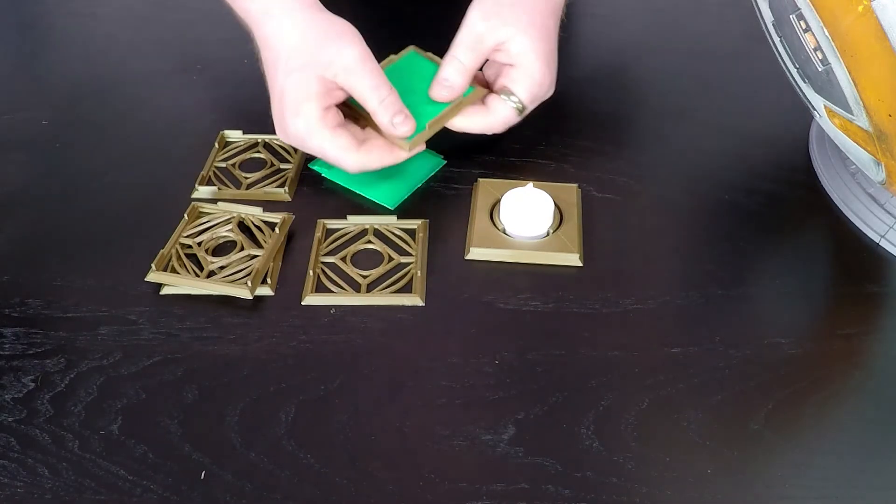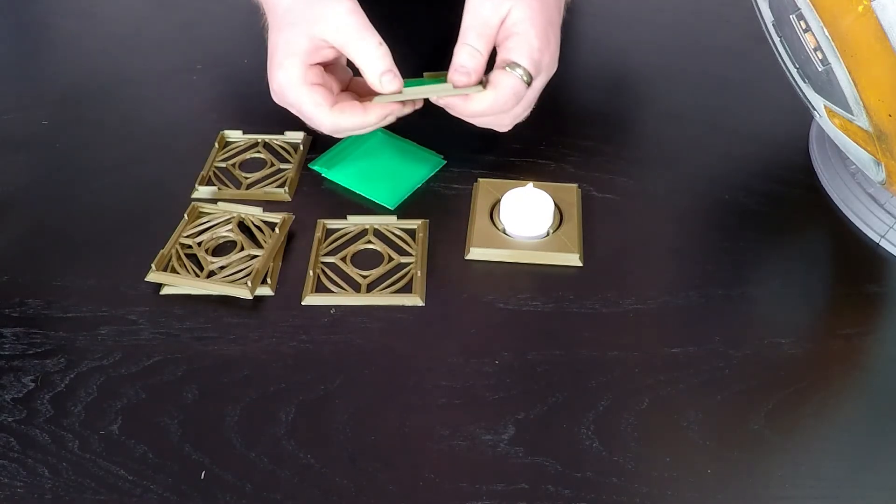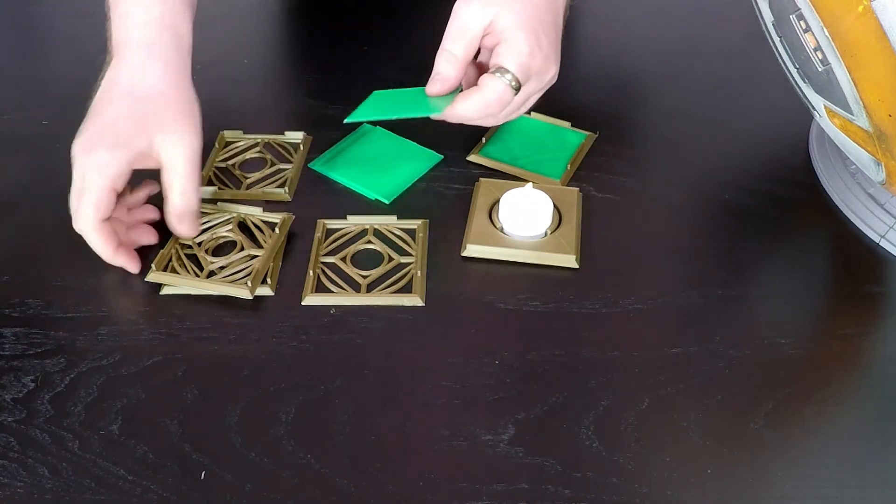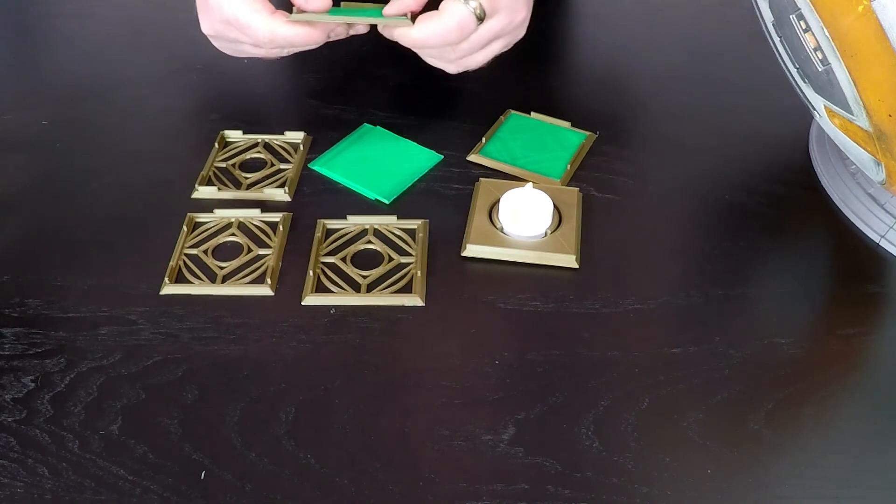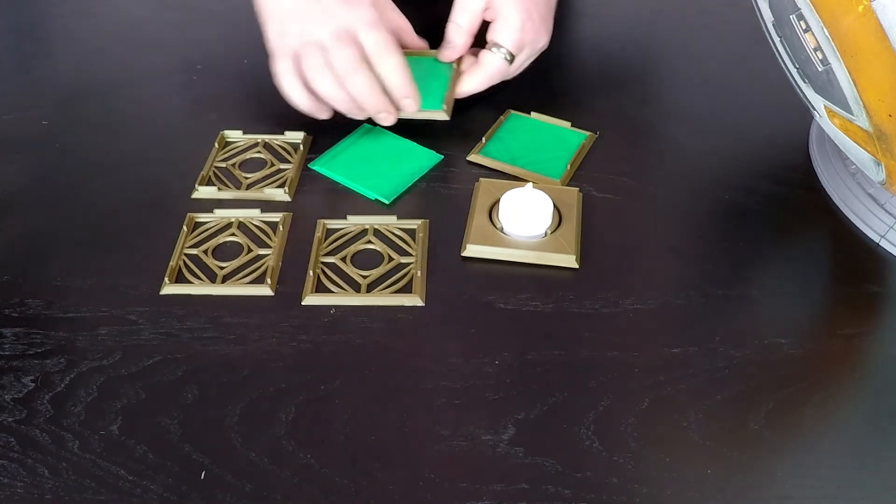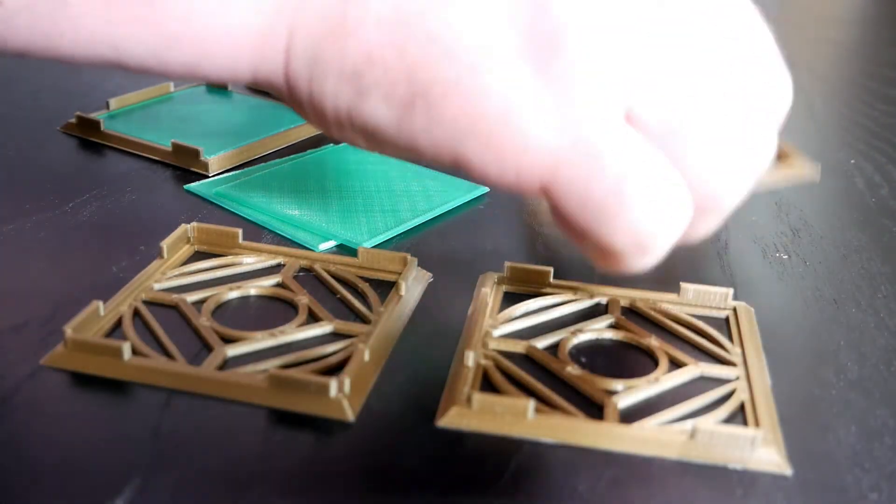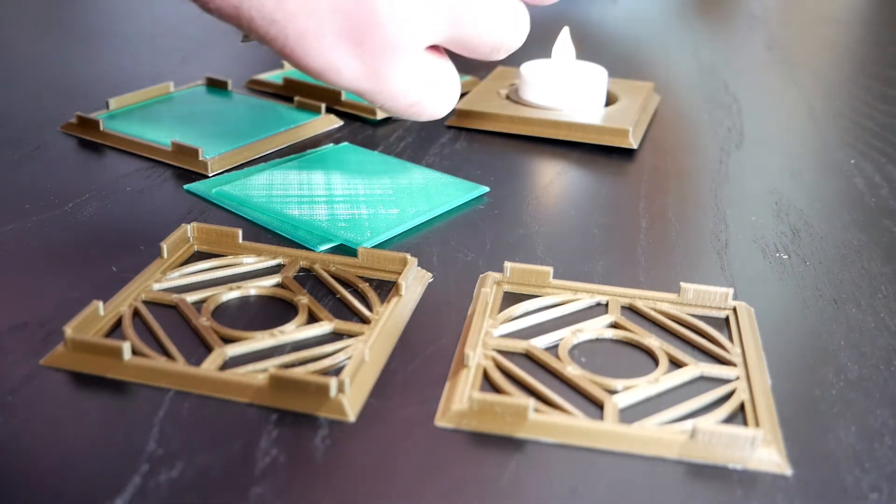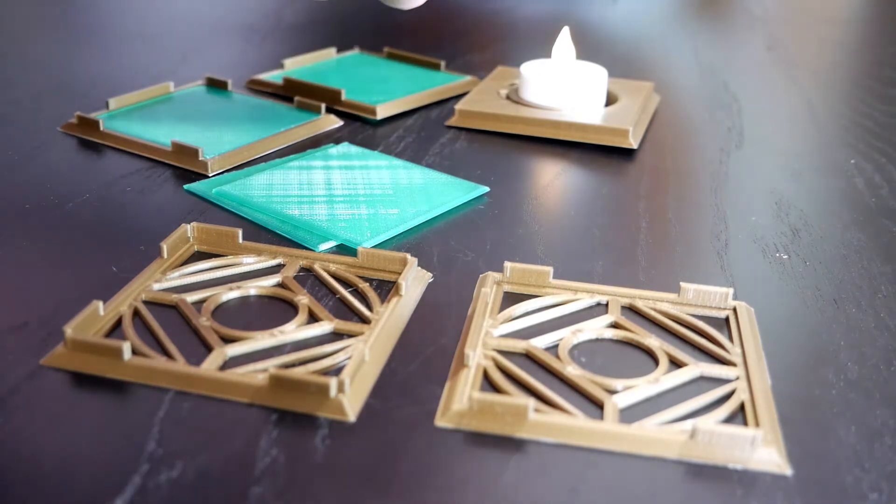Now, when you're actually doing the final assembly, you might want to use a bit of glue to hold everything in place, but the tolerances on these parts are actually pretty good, and we should be just fine for this demonstration. The original design actually called for some colored plexiglass for these inserts, but I haven't been able to find any for a reasonable price, so I just decided to print them.